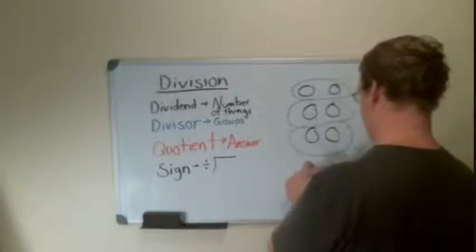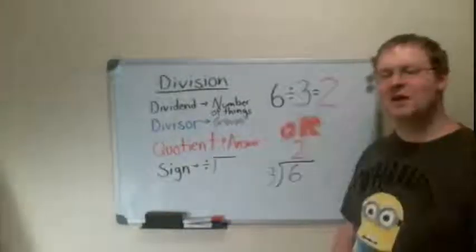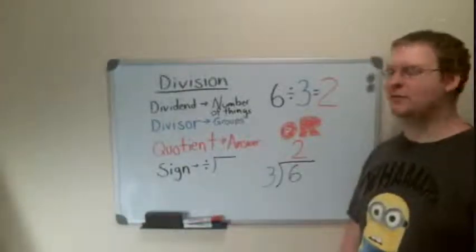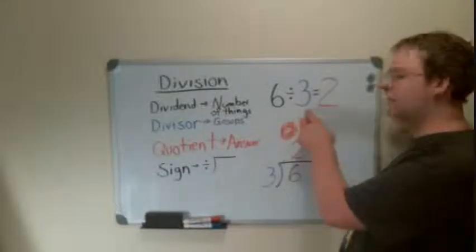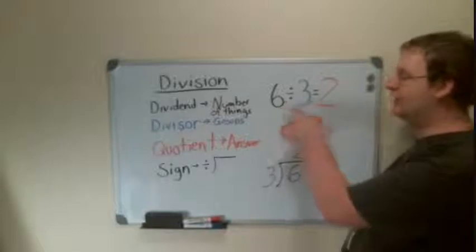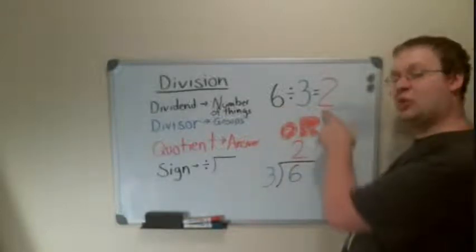So we write our answer for the quotient of two. When you look at division in equation form, what you end up looking at is six divided by three equals two, or the dividend divided by the divisor equals the quotient.